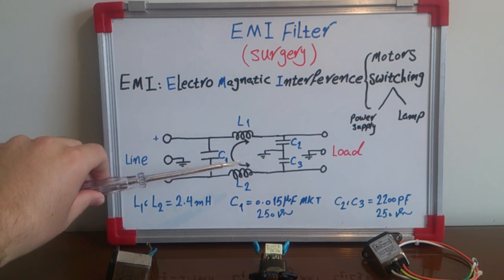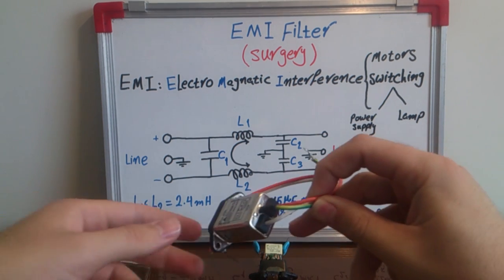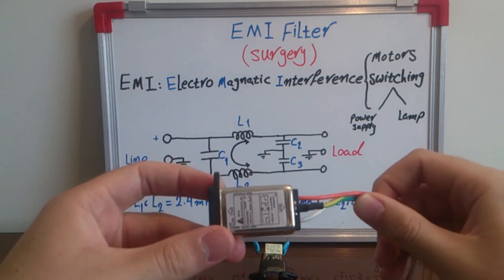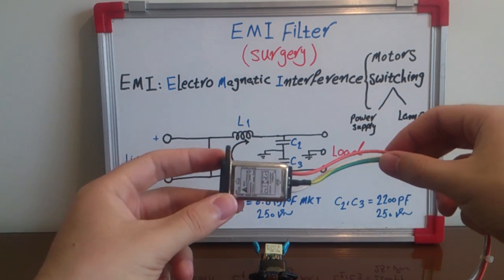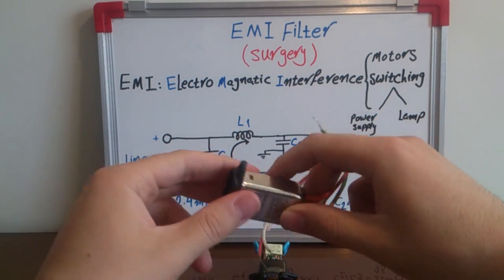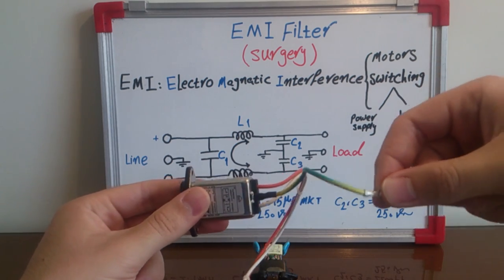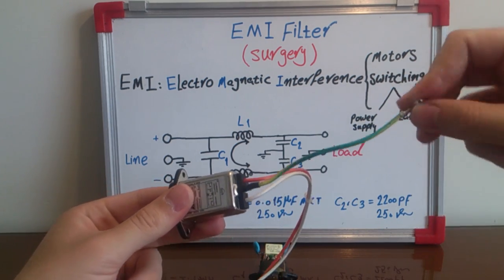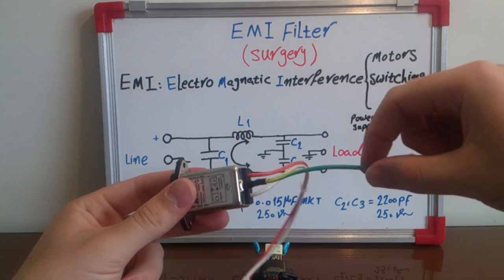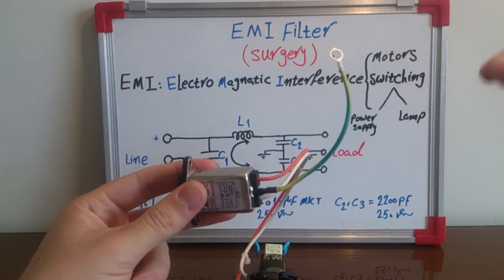When you're buying an EMI filter from the store, it's marked as an EMI filter. This EMI filter has an input side and output side. Most of the time the ground wire color is yellow and green, and it's the ground output wire.